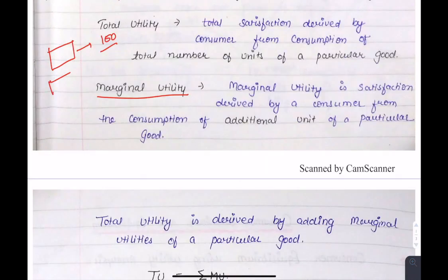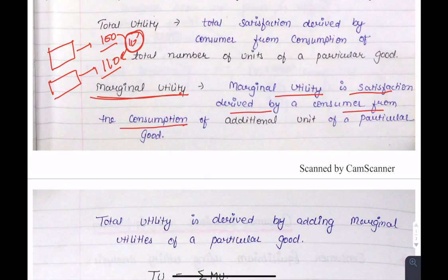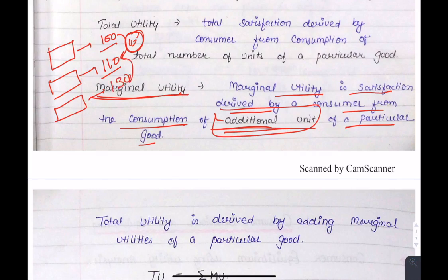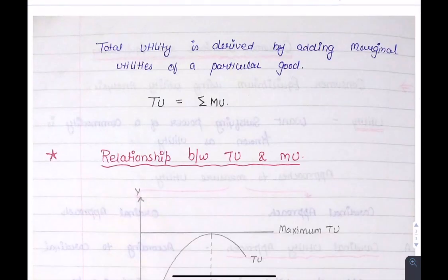Now what is marginal utility? We bought another brick of ice cream and total utility became 110. So this addition of 10 is marginal utility. Marginal utility is satisfaction derived by a consumer from the consumption of additional unit of a particular good. If we consume more and satisfaction becomes 130, the additional unit is 20, so marginal utility is 20. What is the relationship between total utility and marginal utility? If we add all marginal utilities, we get total utility.